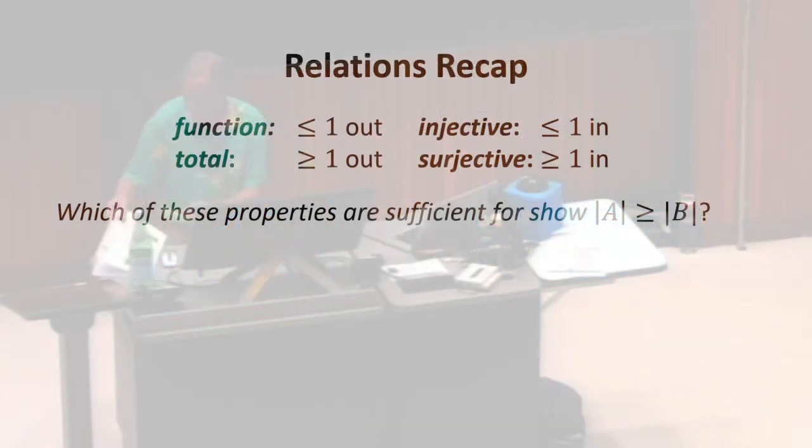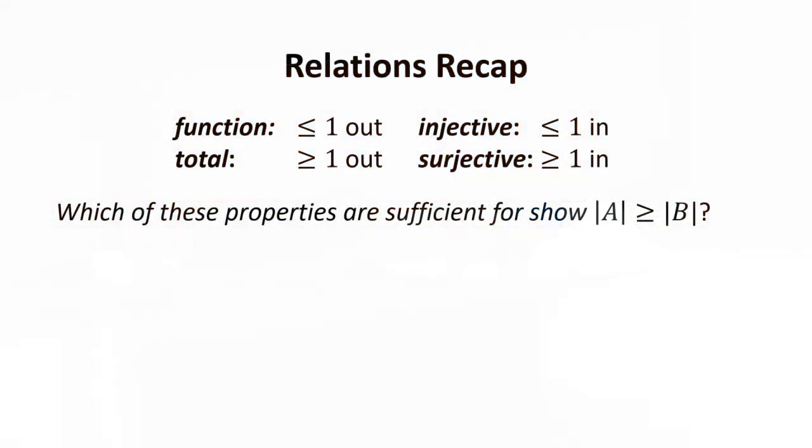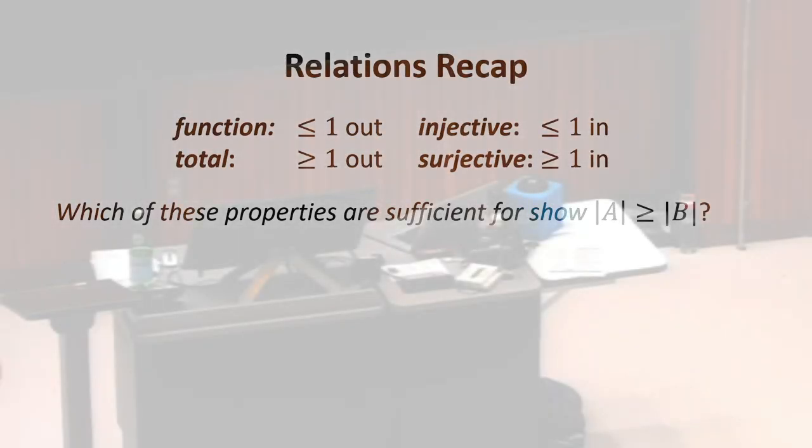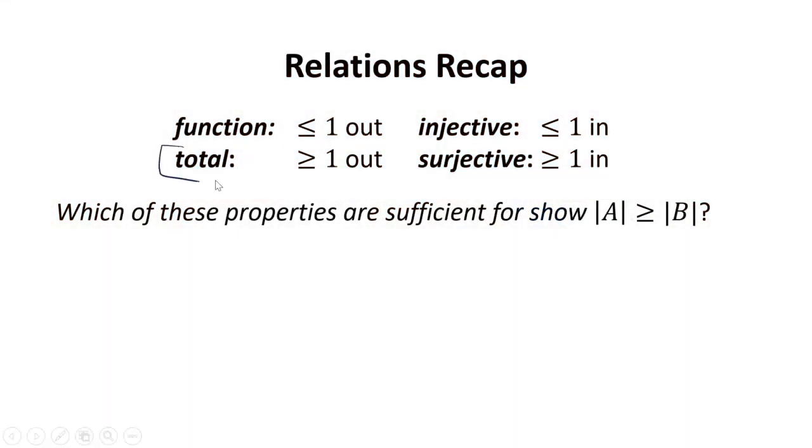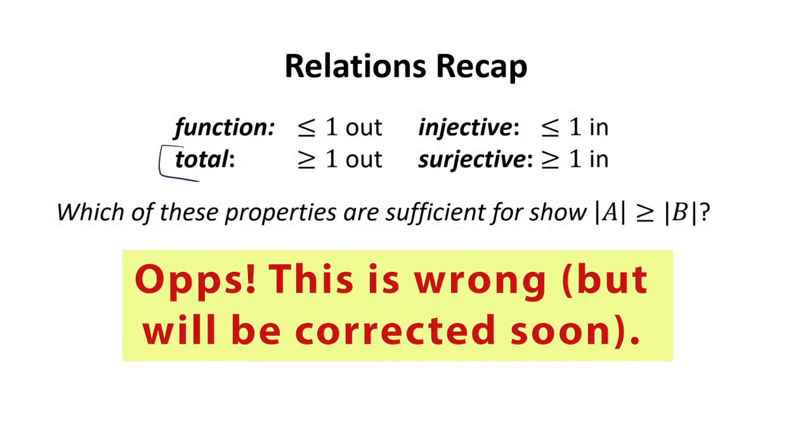So let's make sure we understand those definitions. Which of these properties do we need? So we've got a relation between A and B, and we want to know that the cardinality of A is greater than or equal to the cardinality of B. Which of those properties do we need? Total. Okay. So it definitely needs to be total. If it's not total, what could go wrong? It could be we have all those edges, but we have some elements of A not involved in any edge if it's not total. So it's going to need to be total.